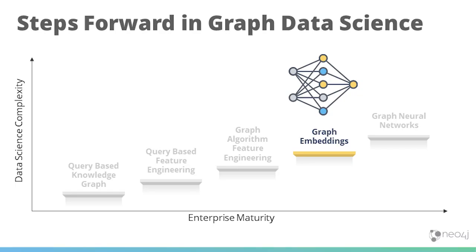Moving on to graph embeddings. I love graph embeddings because they're the sweet spot between feature engineering and deep learning. You can use an embedding as a feature in your traditional machine learning pipeline — treating it just like any other categorical variable. You can use graph embeddings to look at similarity, comparing two embeddings using Euclidean distance to see how similar two nodes are. Or you can use embeddings as your input into a graph neural network — they're a nice transition point.